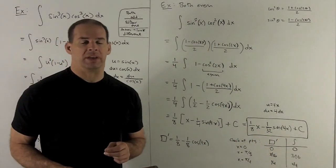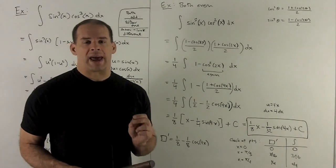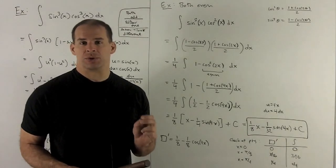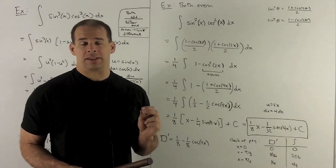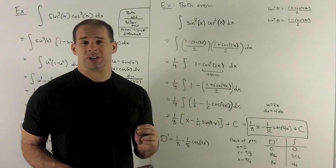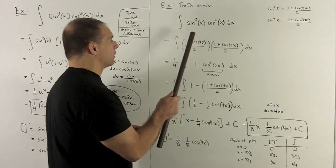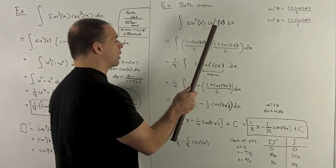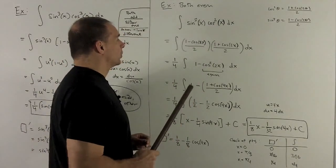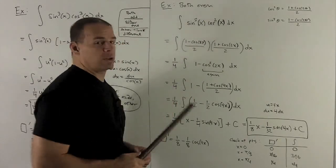Now we consider the case where they're both even. So this is a little bit more ad hoc. You just have to do your substitutions, and then let the final substitution decide what your next move is going to be. So let's try indefinite integral of sine squared x, cosine squared x, dx. So here, m and n are both even, they're both 2.